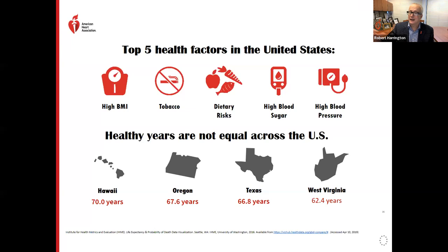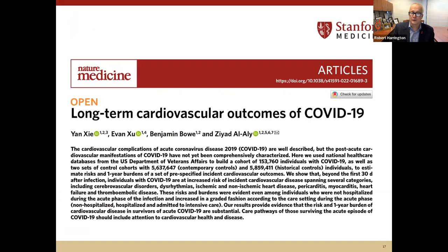Many of us on the call live in Northern California, where we have an extremely healthy population with access to outdoor activities and great foods. But across the country these advantages are not evenly distributed. There are extreme examples: healthy life expectancy is about 70 in Hawaii versus 62 in West Virginia. Healthy life aggregates not just the number of years but how many of those years are full of good health — so if someone has a stroke at 50 and lives to 70, their health-adjusted life expectancy is actually 50.